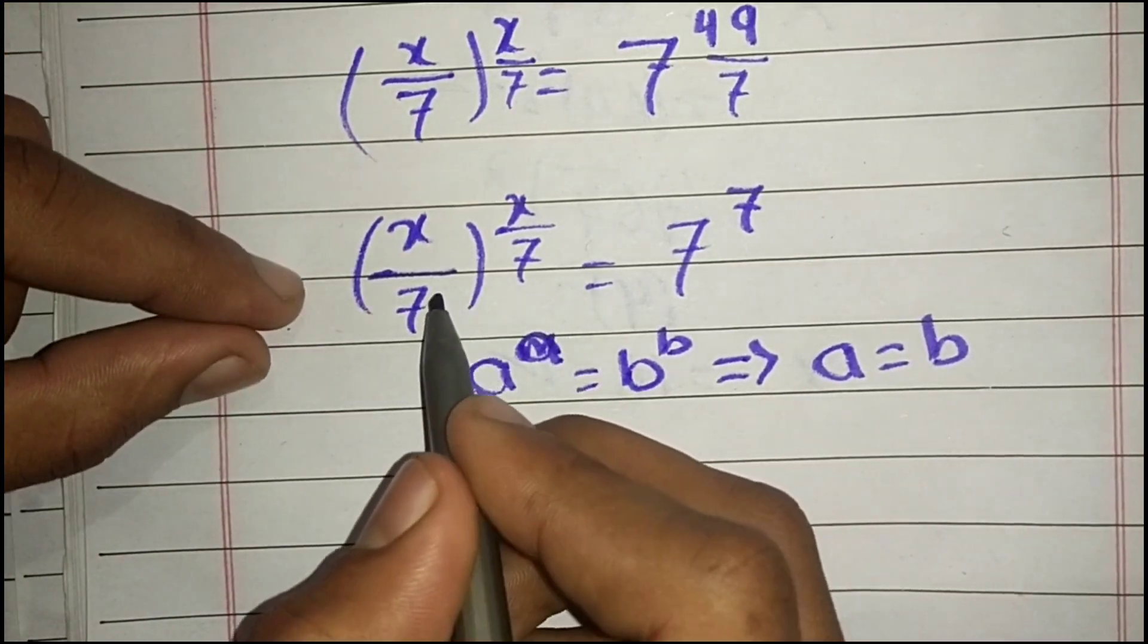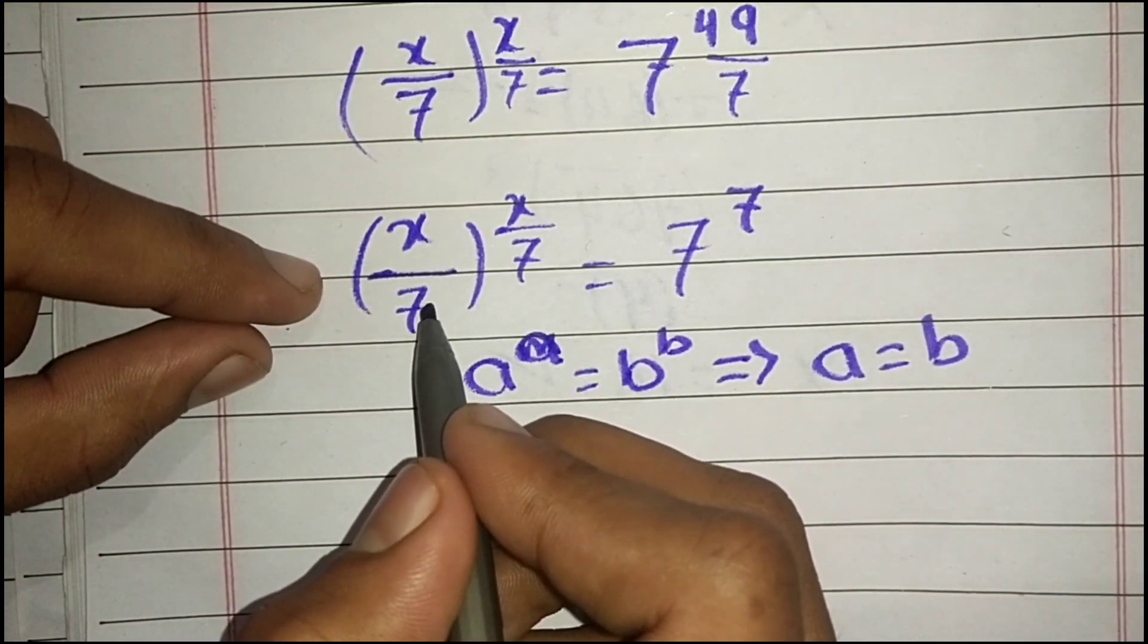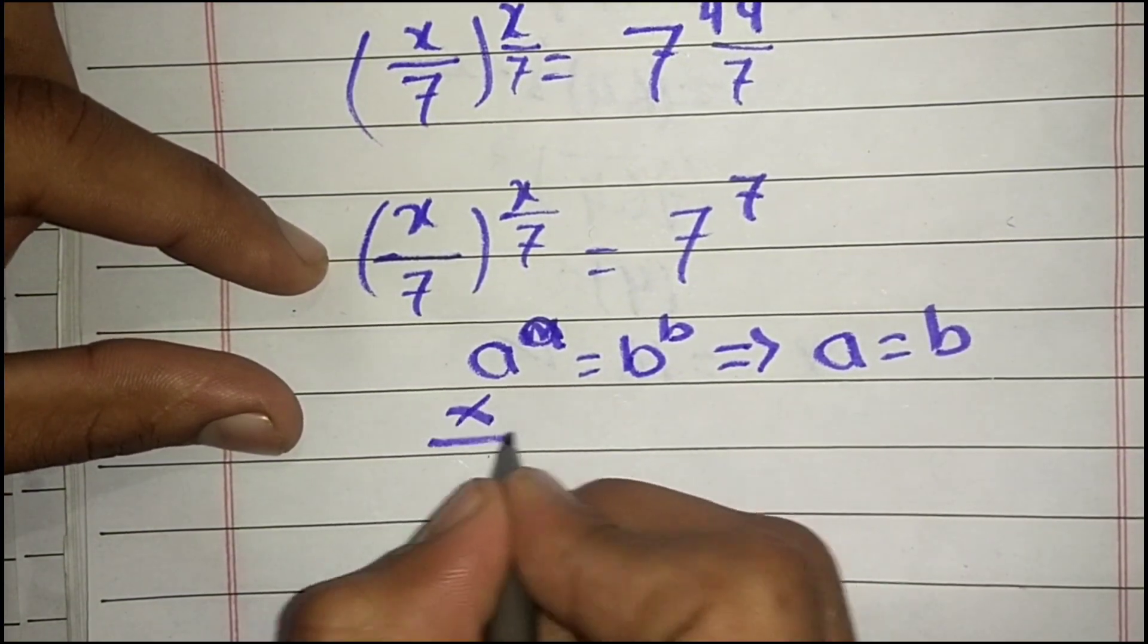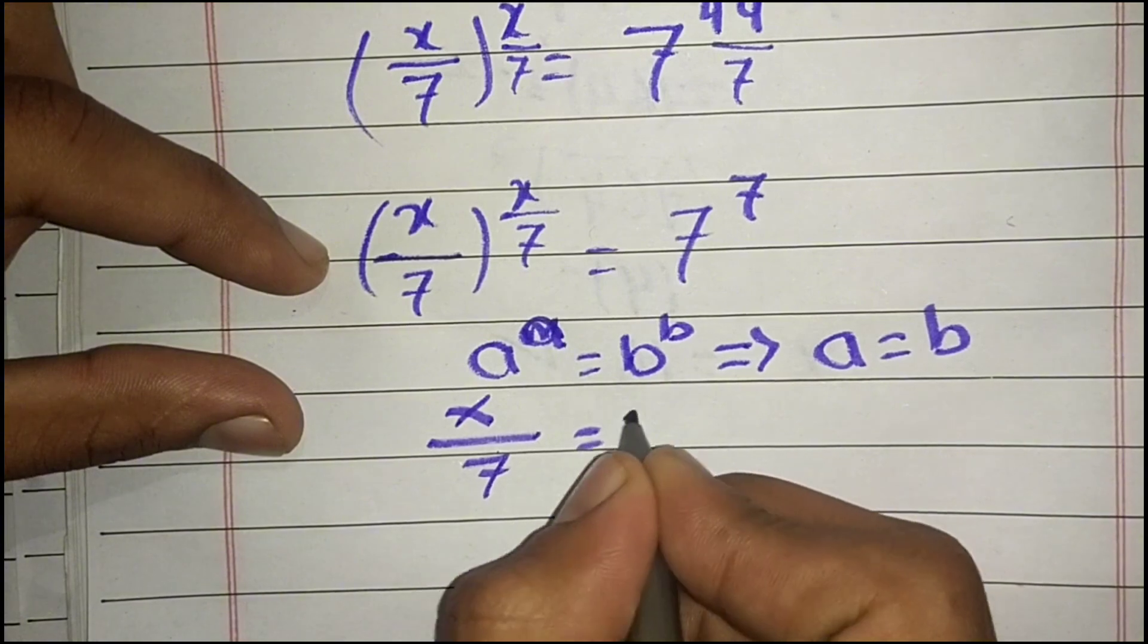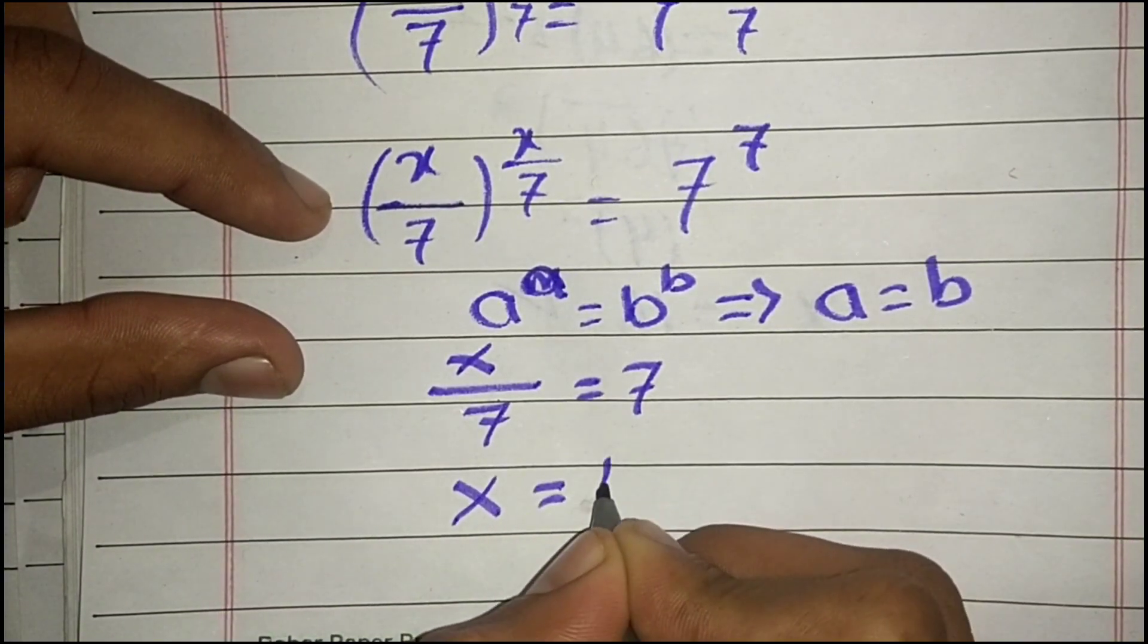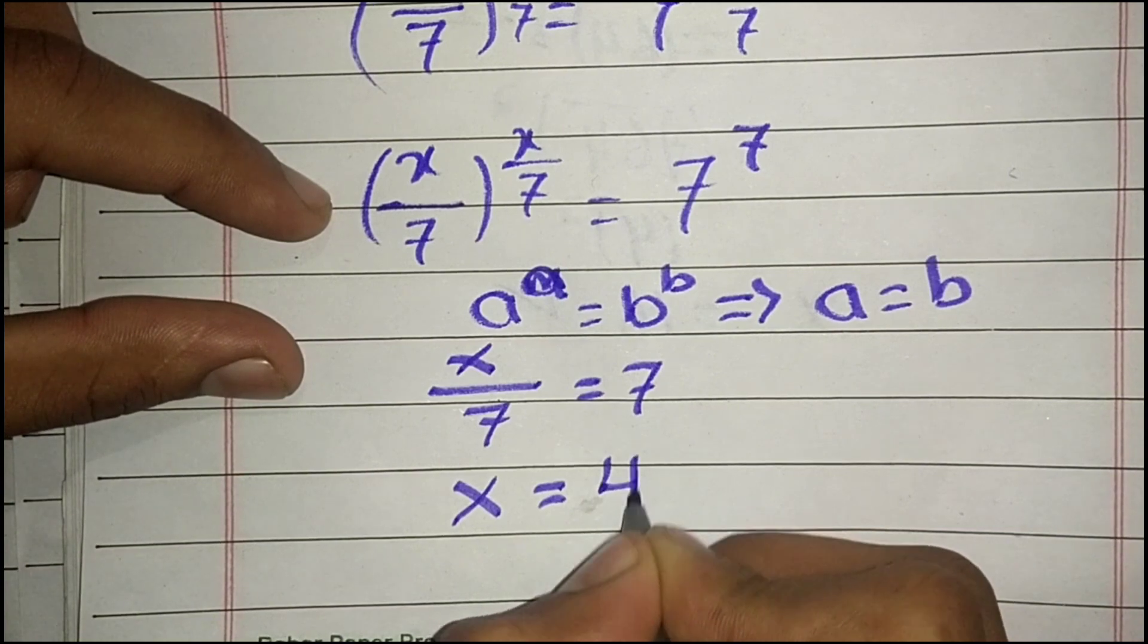Here we have the same case, so we can compare or equate the bases. So x/7 = 7, and x = 49.